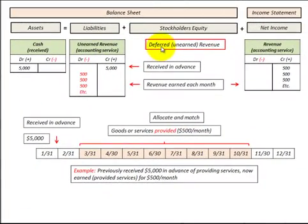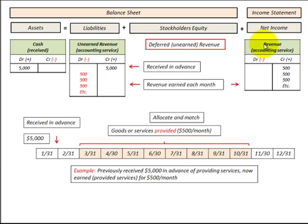In this presentation we're going to look at deferred unearned revenue. Unearned revenue is a liability on the balance sheet, and once it becomes earned it becomes revenue, which is part of net income on the income statement. So what is an unearned revenue?